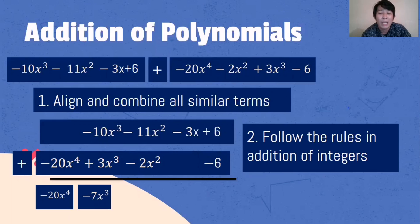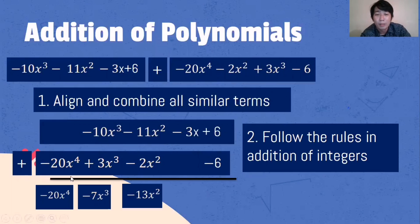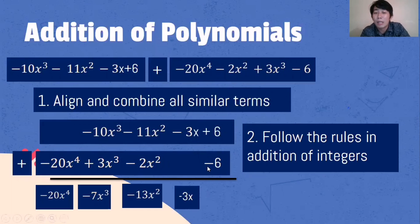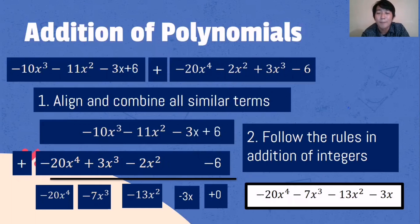Next: we have the same sign for the x squared terms, so we add — negative 11 plus negative 2 is negative 13x squared. Bring down negative 3x. Then 6 plus negative 6 — adding a number and its opposite is always equal to zero. Our final answer is negative 20x⁴ minus 7x cubed minus 13x squared minus 3x.